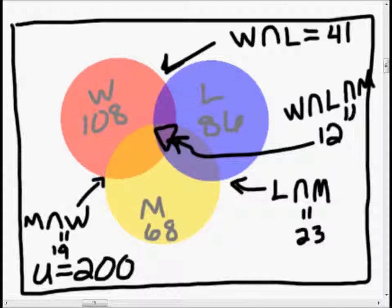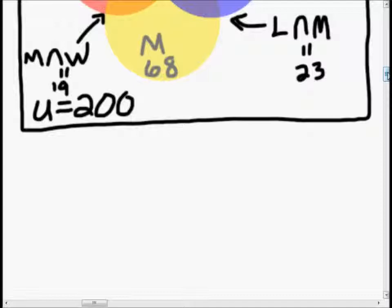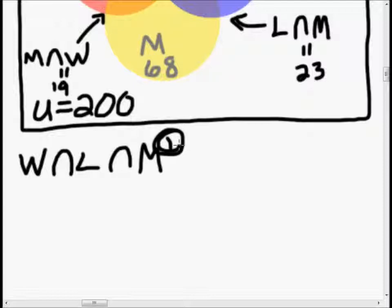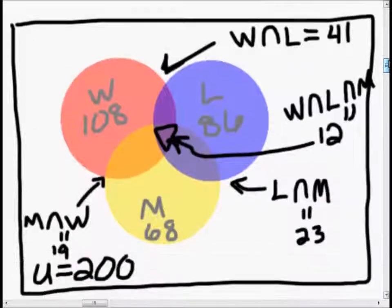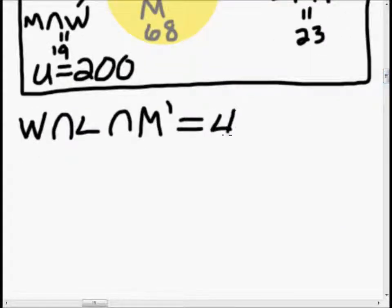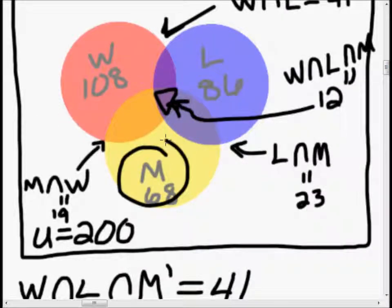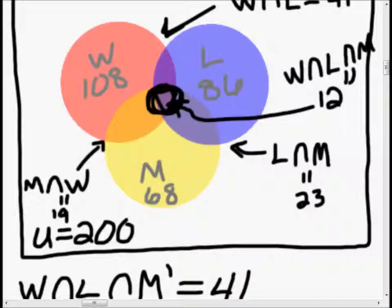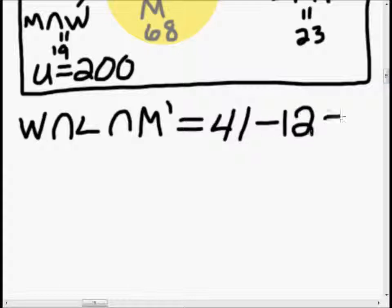The first thing I want to do is narrow down these overlaps. I want to find the people who are in the west and in a large city, but who are not married — that's this little section right here. So that is west intersection large city intersection not-married. We know the people in west and large city total 41 — that was given to us. We subtract the 12 who are in all three. So that's 41 minus 12, which equals 29.